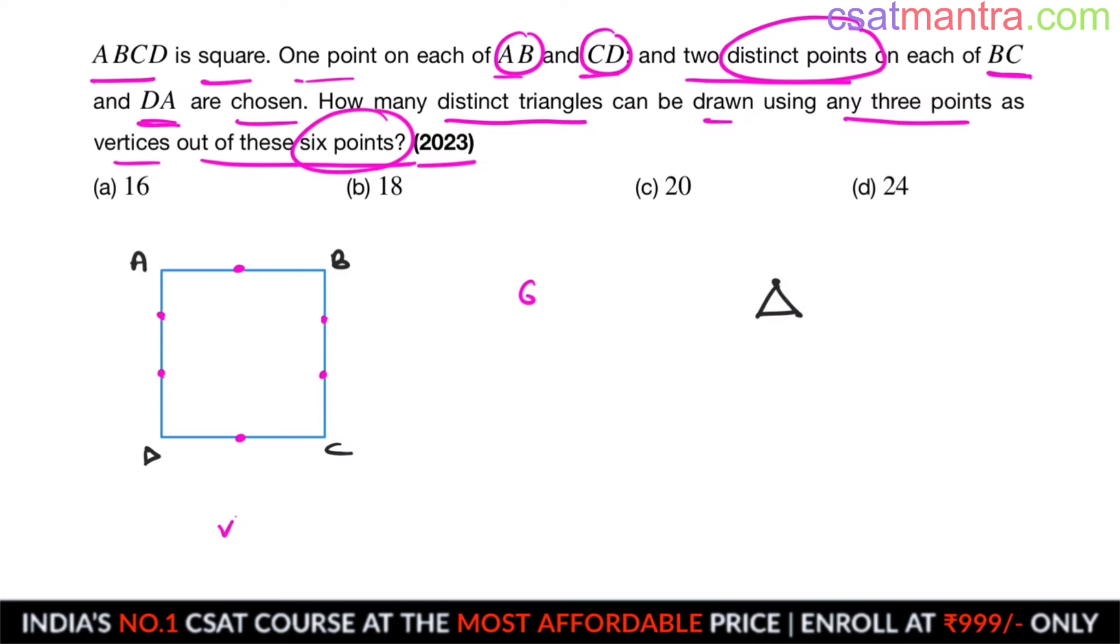To draw a triangle, no three points should lie on single line. Here no three points lying on single line. Out of these six points, no three points are collinear.